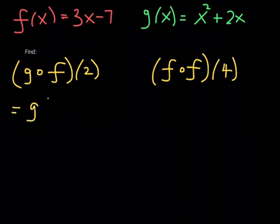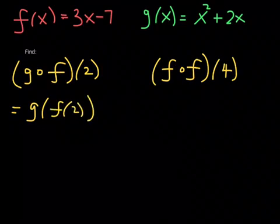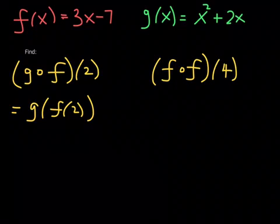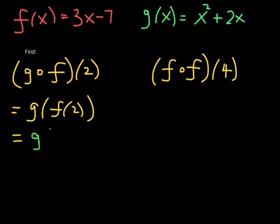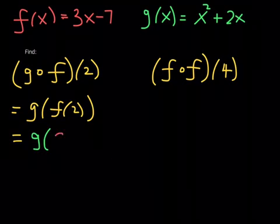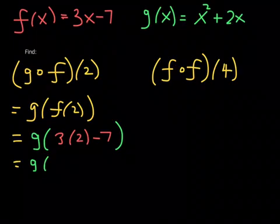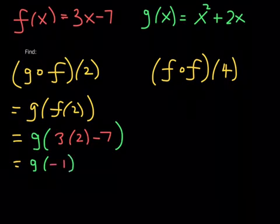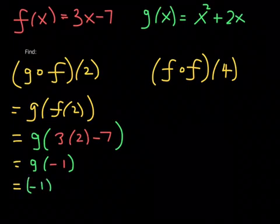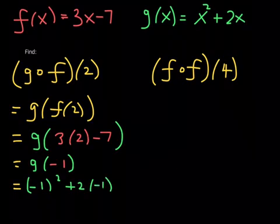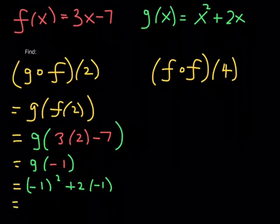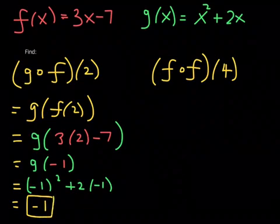g composed with f at 2 is, by definition, g of f of 2. The first thing we do is plug 2 into f: 3 times 2 minus 7 is 6 minus 7, which is negative 1. Then we plug negative 1 into g: negative 1 squared plus 2 times negative 1 is 1 minus 2, which gives us negative 1. So g composed with f at 2 is negative 1.